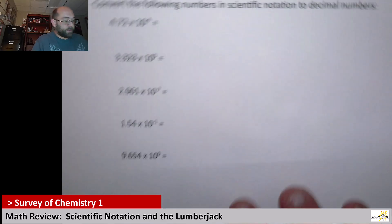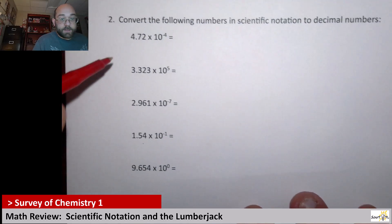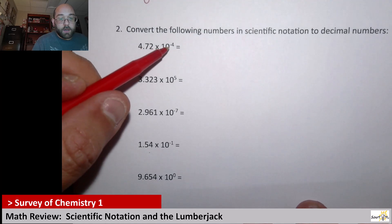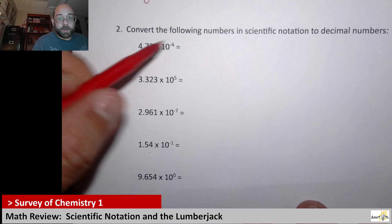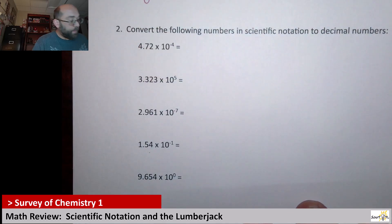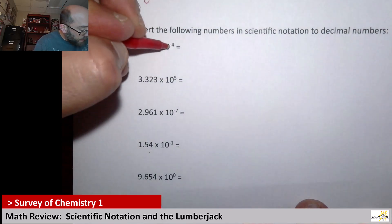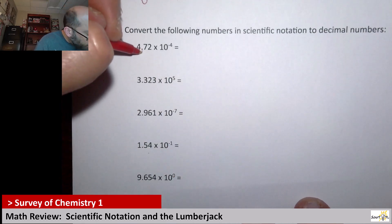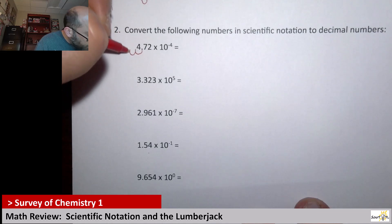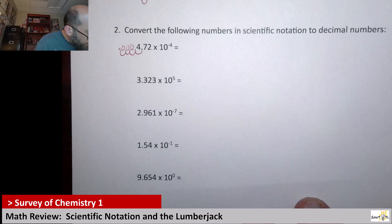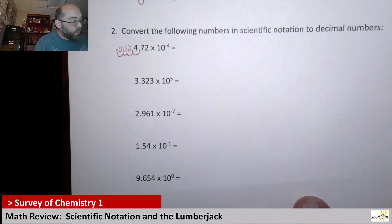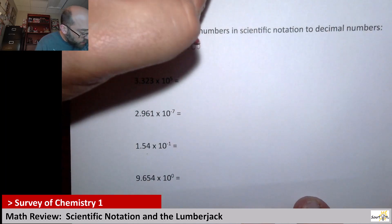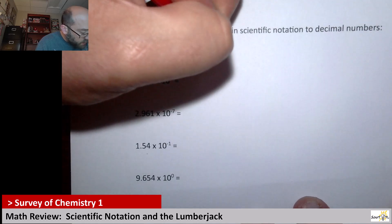So next we've got this one that says times 10 to the negative 4. So I need to turn this into a decimal number. That means I need a number a whole lot smaller than 1. So that means I need to go 1, 2, 3, 4. So that means there should be 3 zeros in front of the 4 now. So it should be 0.000472.